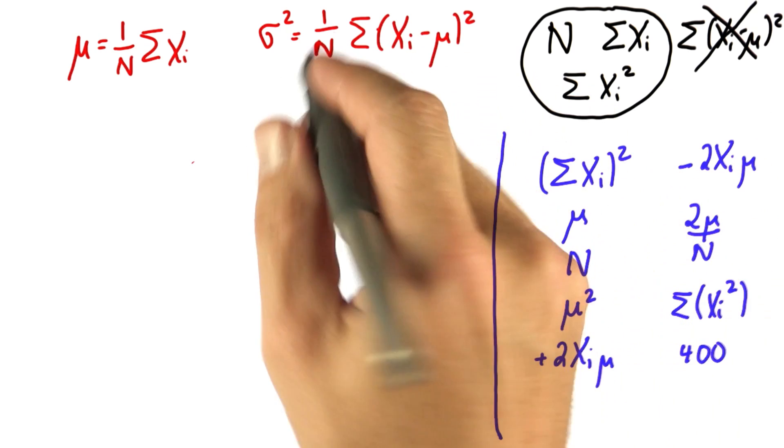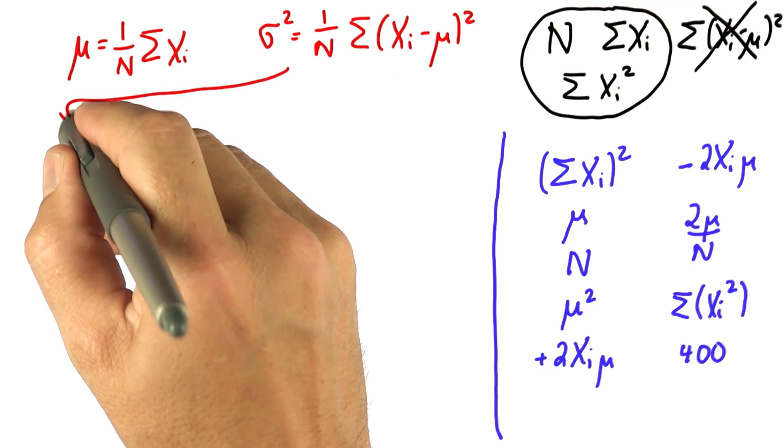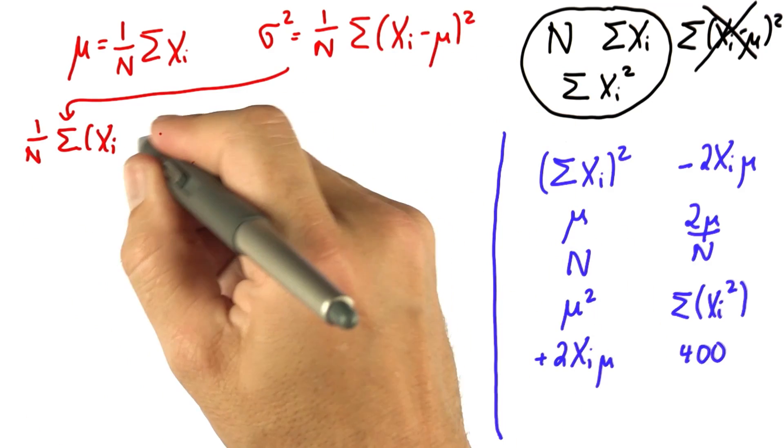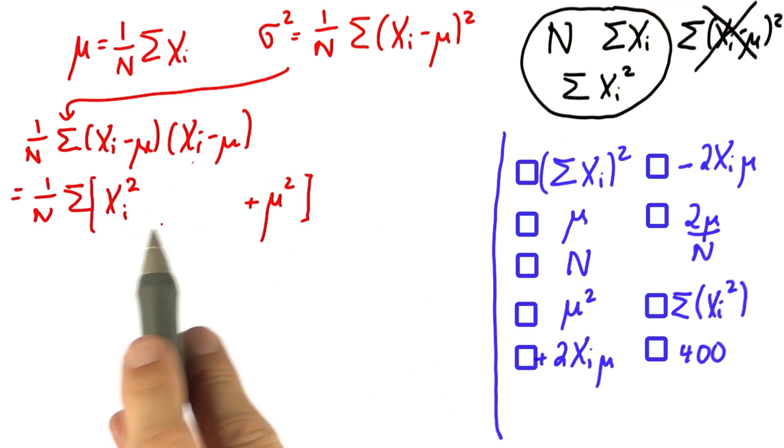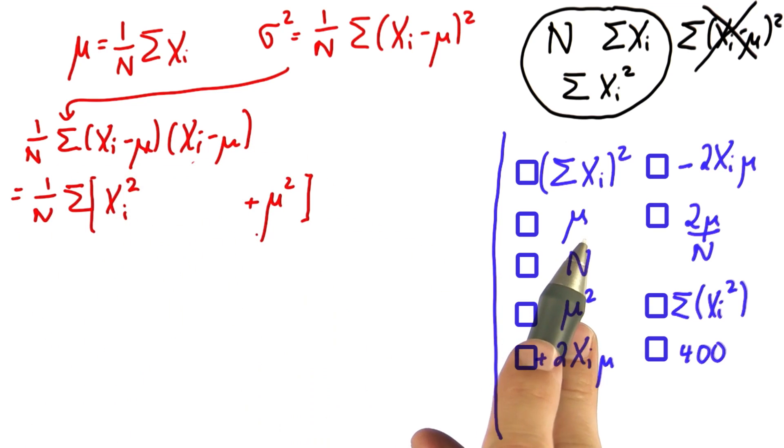So let me do the first step by hand and rewrite σ² by factoring out the square. And I can rewrite this by multiplying things out. So help me. What do you think goes in the middle? Which of those expressions?